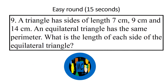A triangle has sides of length 7 cm, 9 cm, and 14 cm. An equilateral triangle has the same perimeter. What is the length of each side of the equilateral triangle?